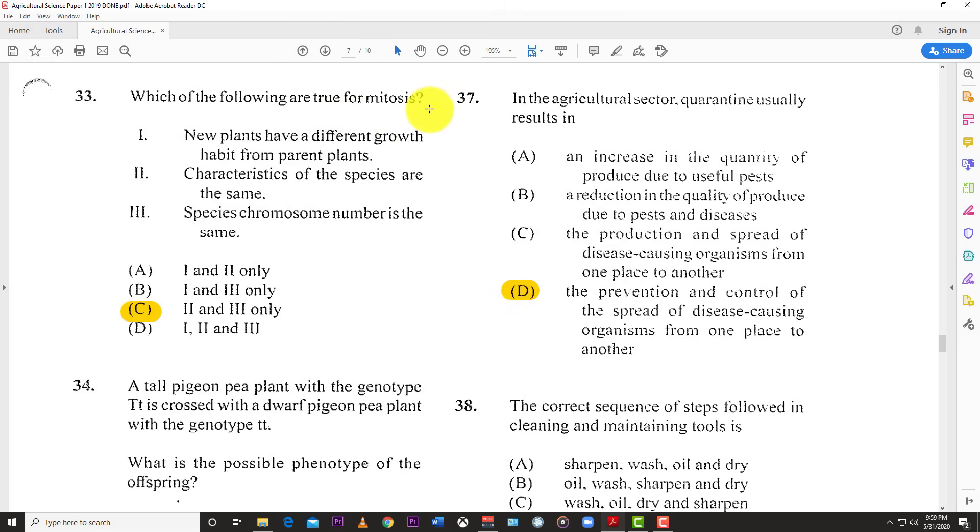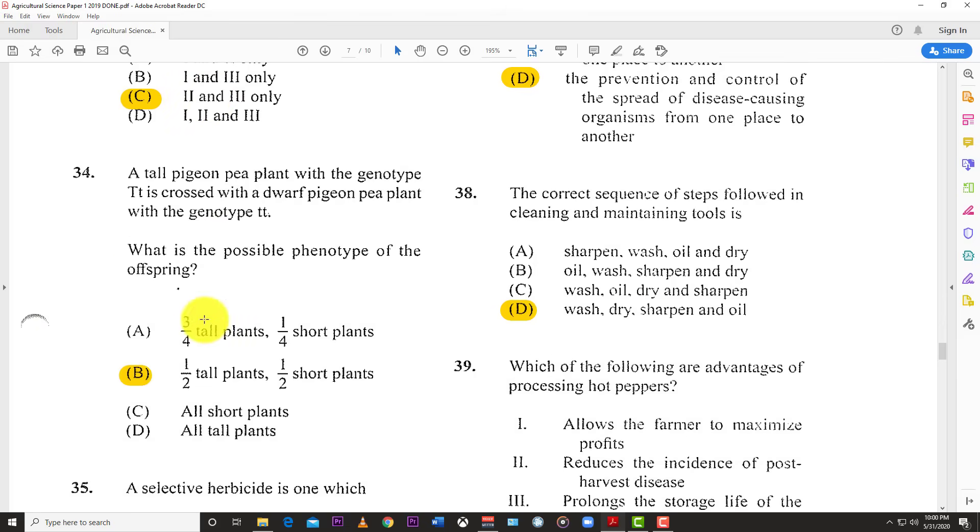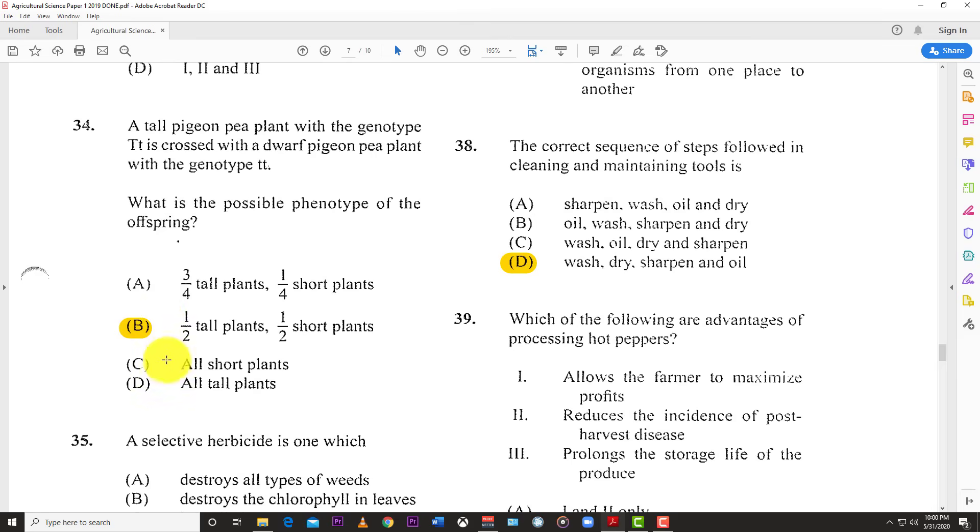Number 33: Which of the following are true for mitosis? Mitosis is cell division. The best answer is 2 and 3 - characteristics of the species are the same and species chromosome number is the same. New plants having a different growth habit from parent plant is not true because in mitosis, the offspring will be similar to the parent with similar growth patterns. That's why you exclude 1.